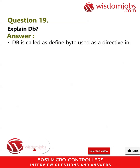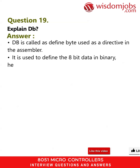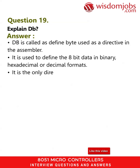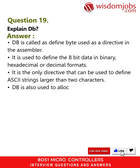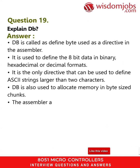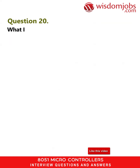Question 19: Explain DB. Answer: DB is called as Define Byte, used as a directive in the assembler. It is used to define 8-bit data in binary, hexadecimal, or decimal formats. It is the only directive that can be used to define ASCII strings larger than two characters. DB is also used to allocate memory in byte-sized chunks. The assembler always converts the numbers into hexadecimal.